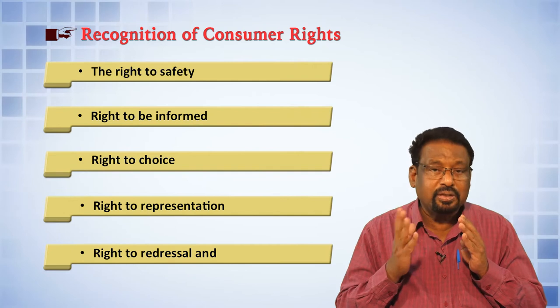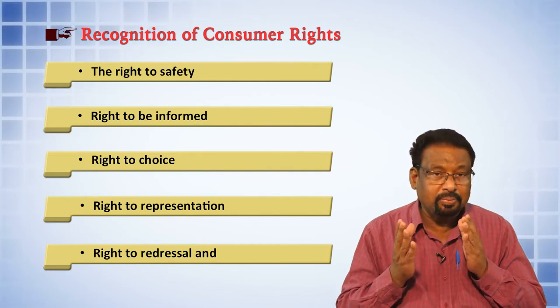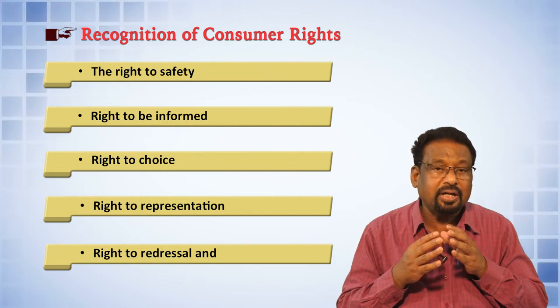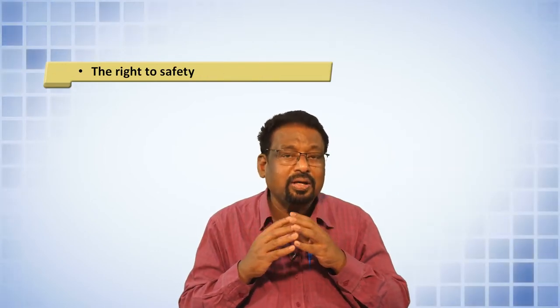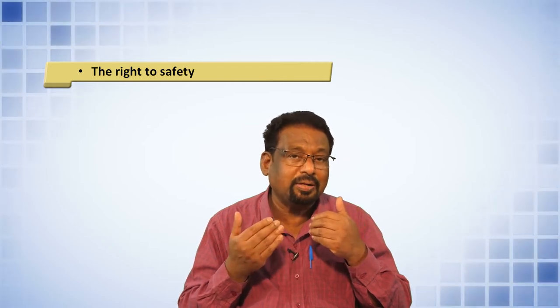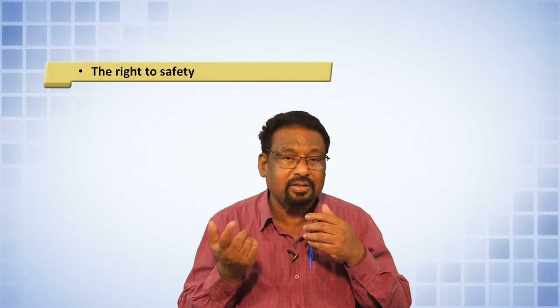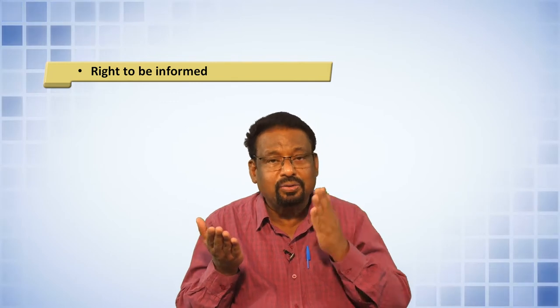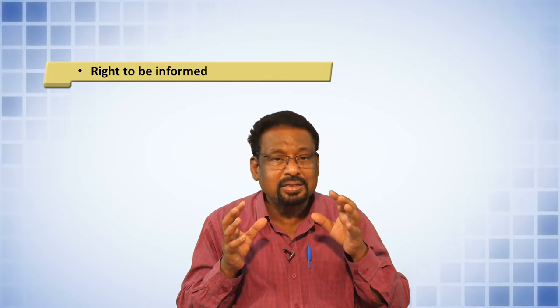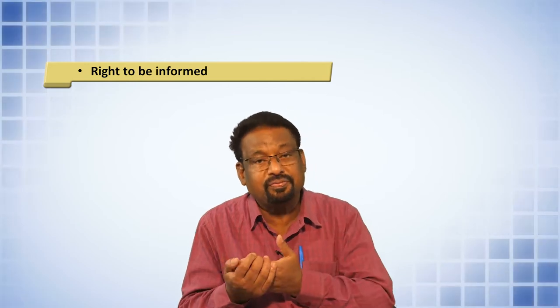Now, the rights of consumers. There are six rights: the right to safety, the right to be informed, the right to choice, the right to representation, the right to redress, and the right to consumer education. The right to safety means that the product sold must meet safety standards, to be preserved and maintained by the seller, producer, or manufacturer. The right to be informed means the consumer has the right to be informed of the price, quality, quantity, purity, and content — whether the product contains all the ingredients prescribed by regulatory authorities.